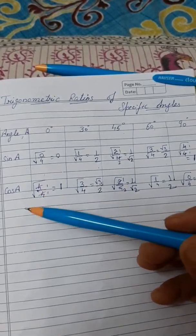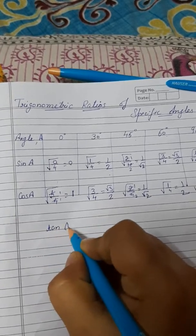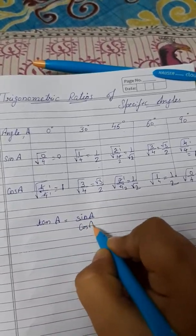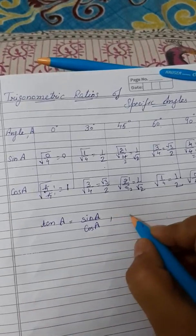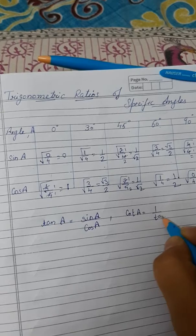Now sine is known, cosine is known, we can find tangent. What is tangent? Tan A will be sine A upon cosine A. And if tan is known, then cotangent A. What is cotangent? 1 by tan A.